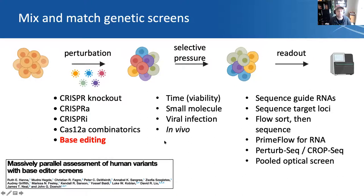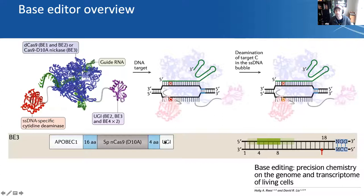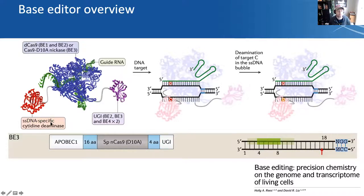The results I'm going to talk about today are mostly covered in our publication, but there will be some unpublished results towards the end. So base editors — the basic idea is that you have Cas9, using a nickase version so it only cuts one strand and does not generate a double-strand DNA break. One then appends different domains to Cas9 that allow chemistry on the actual DNA bases. The version I'll present is the BE3 architecture, where an APOBEC domain on the N-terminus and a UGI domain on the C-terminus allows for the introduction of C-to-T edits in the mammalian genome.